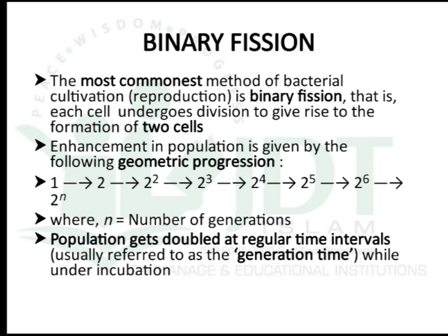We can find out the total number of cells after n generations as 2 raised to n. Population gets doubled at a regular interval, and the time taken to get doubled is known as generation time, which occurs under incubation.